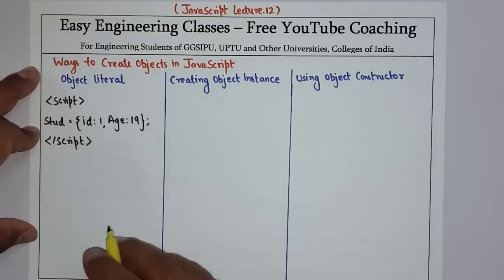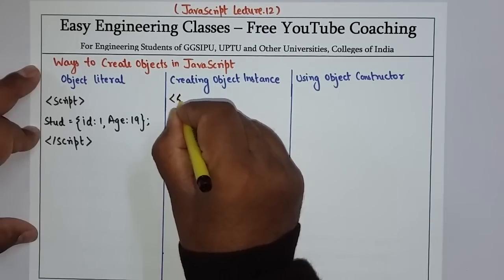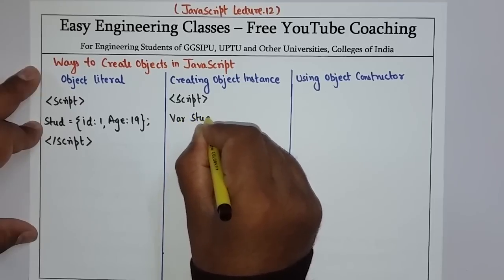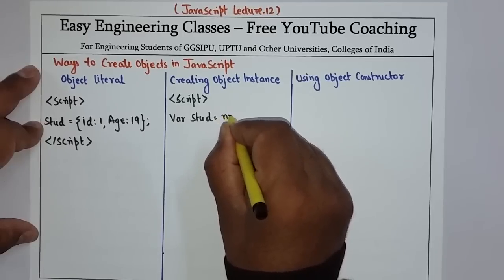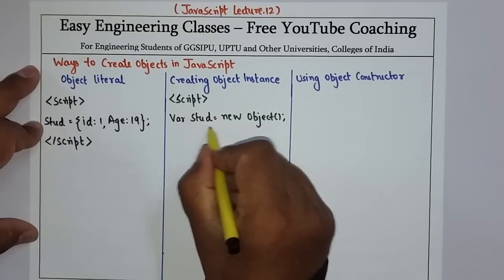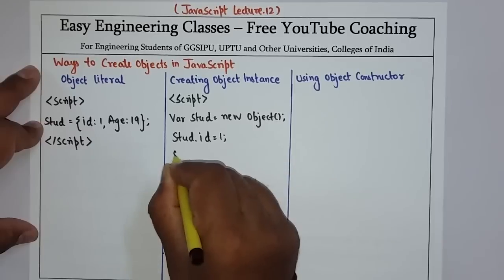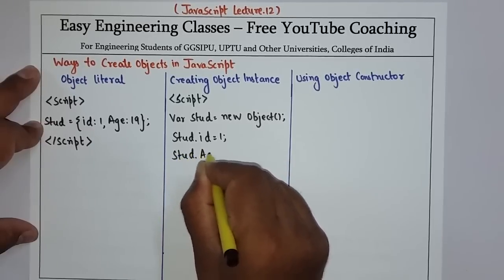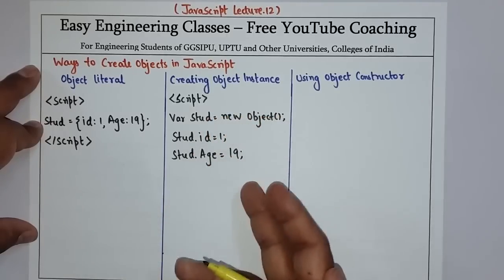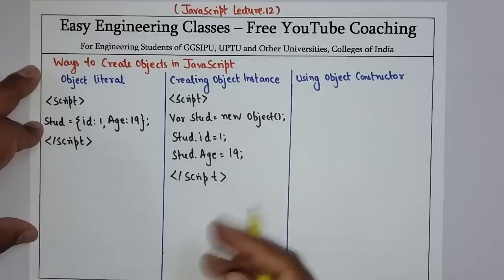The second way is by creating an instance of object. In this, you have to first create an instance of object — for example I want to create object 'htud', and we will pass the instance of object using 'new object'. Now htud is also an object. And to set its values: htud.id is equals to 1, htud.age is equals to 90. So that is how you can create an object and set the values of properties. You can use any of these methods as per your convenience.